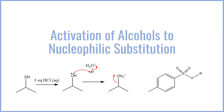Hey everyone, welcome to BCP Med. In this video we're going to be taking a look at how you activate an alcohol towards a nucleophilic substitution. OHs are poor leaving groups and they require certain activation either with acid or with the substitution towards a tosylate group in order to participate in SN1 and SN2 processes.